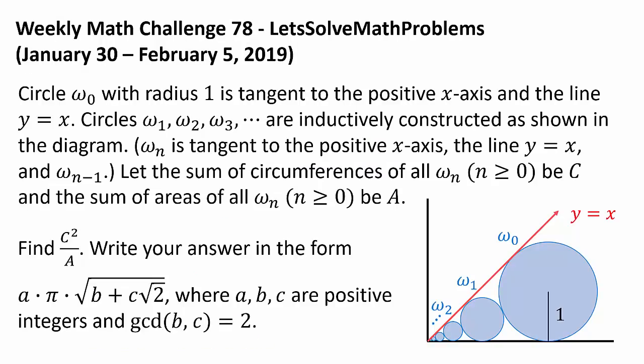Circle omega-naught with radius 1 is tangent to the positive x-axis and the line y equals x.